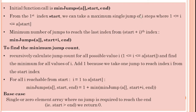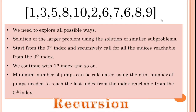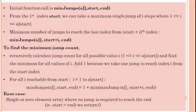The minimum number of jumps to reach the last index from start plus i is found by calling min_jumps(a, start+i, end). To find the minimum jump count, we recursively calculate this. i varies from 1 to a[start], and we find the minimum over all values of i. We have to add 1 because we have taken one jump to reach index i from the start index. So for all i reachable from the start, i varies from 1 to a[start], we add 1 to the recursive result.